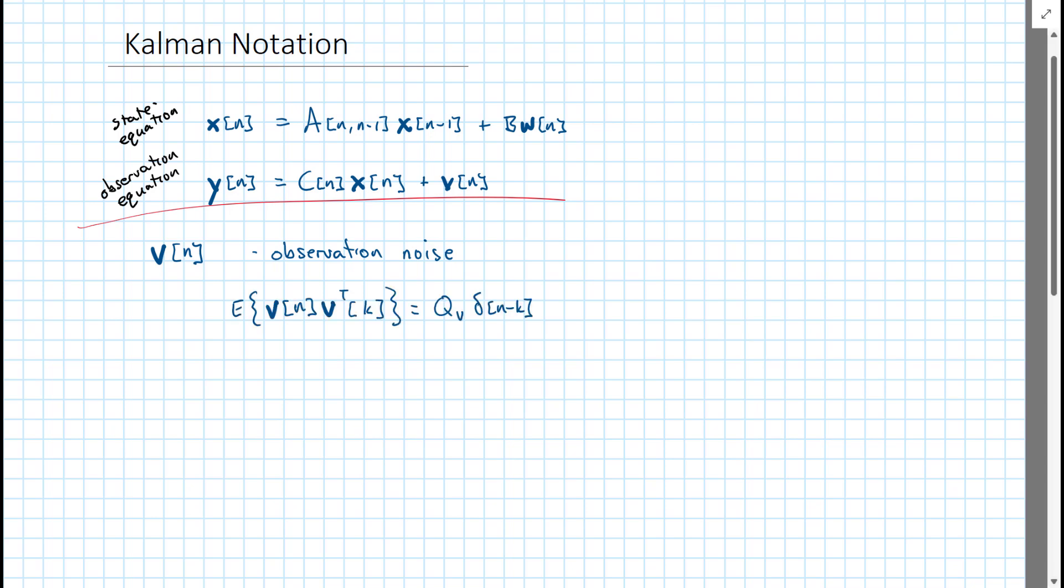We'll start at a simple spot, the observation noise V. V has an autocorrelation matrix Q_V, and we assume that the vectors, the V vectors, are uncorrelated and zero mean.